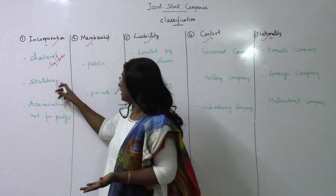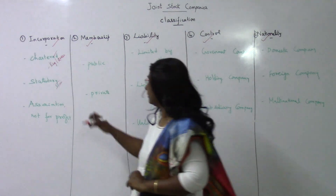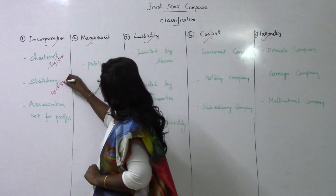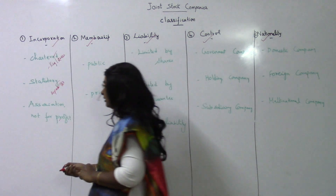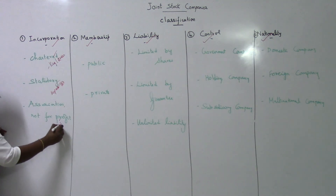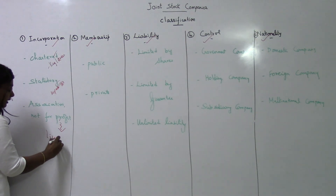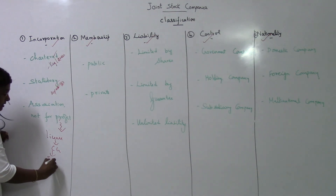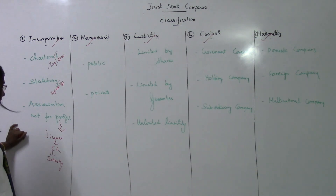Statutory companies will have a separate act passed by Parliament or State Assembly. Then there is the association not-for-profit — a company is a voluntary association made for profit, but this type of company is where a license will be given by the central government for promoting something useful for society: commerce, arts, science, sports, etc.